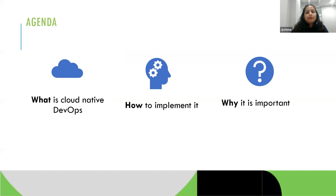The agenda of my talk is very simple and straightforward. I'll be focusing on three elements of cloud native DevOps. First, what do we mean by cloud native DevOps. Then the how — how we implement it at Aon and the best practices an organization can follow. And finally the why — why it is important to move to cloud native DevOps. These are the three main topics I'll be covering.